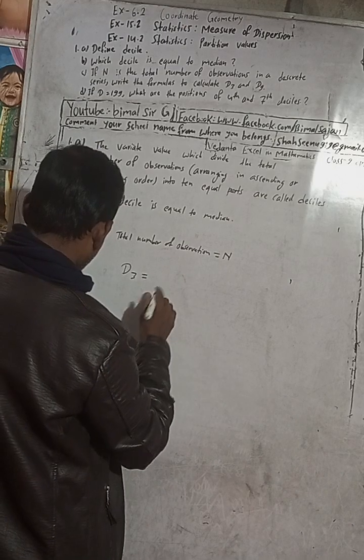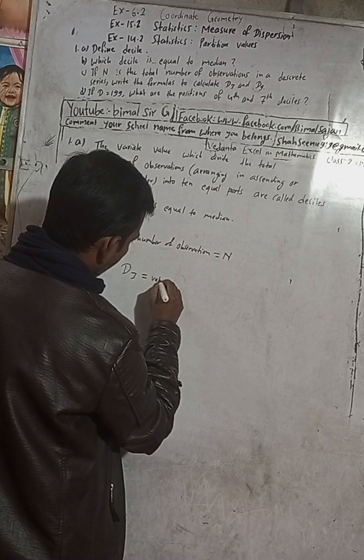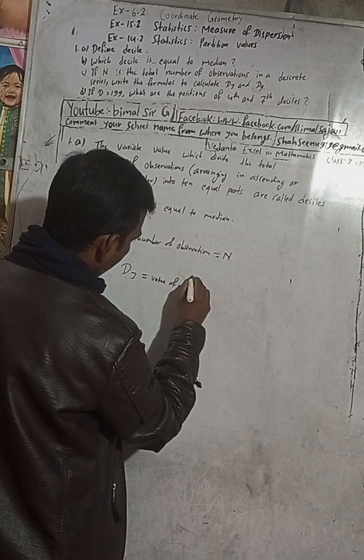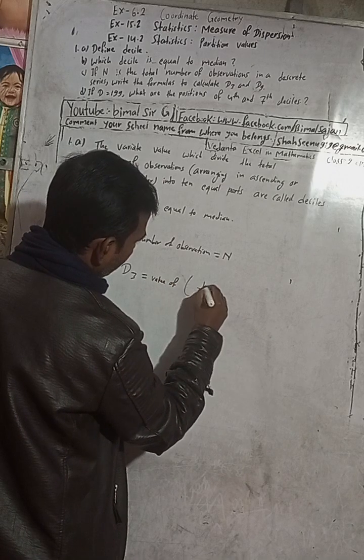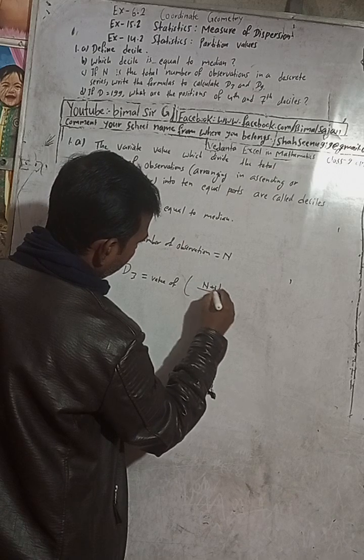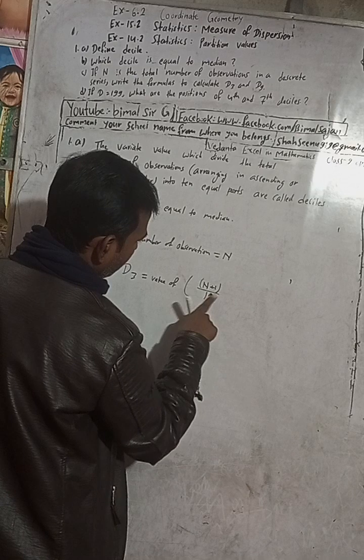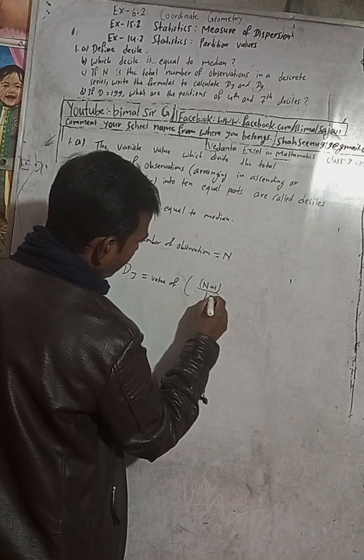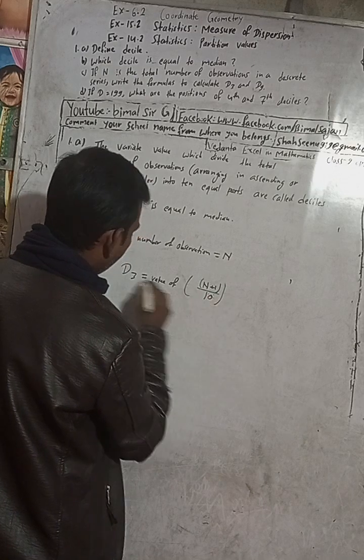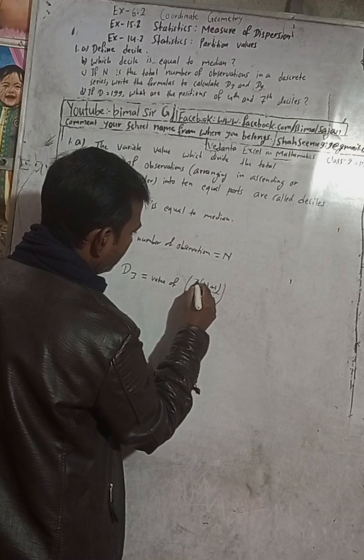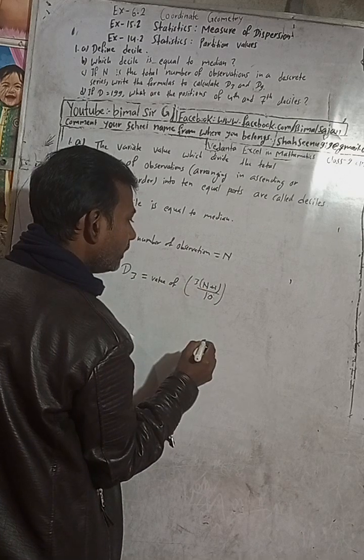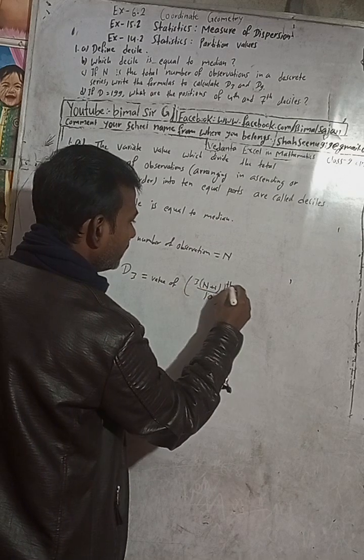We have to write here D3 is equal to the value of capital N plus 1 by 10, and since there is 3, so you have to multiply with 3, and there is TH item.